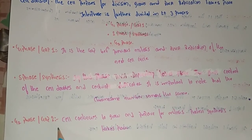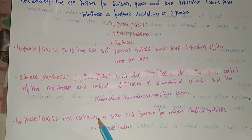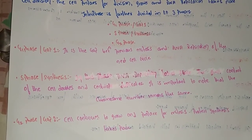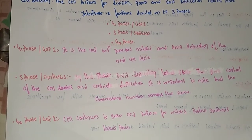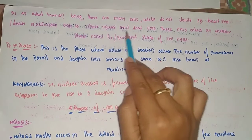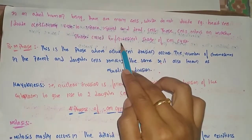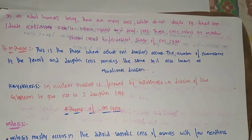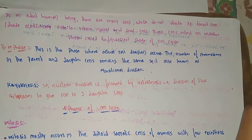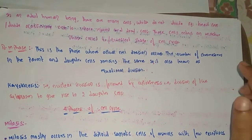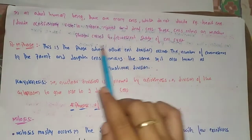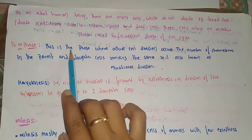In G2 phase, the cell continues to grow and prepare for mitosis, during which protein synthesis takes place. In adult humans, some cells such as heart cells do not divide, or divide only occasionally to replace injured and dead cells. These cells enter an inactive phase called G0, or the quiescent stage of the cell cycle.